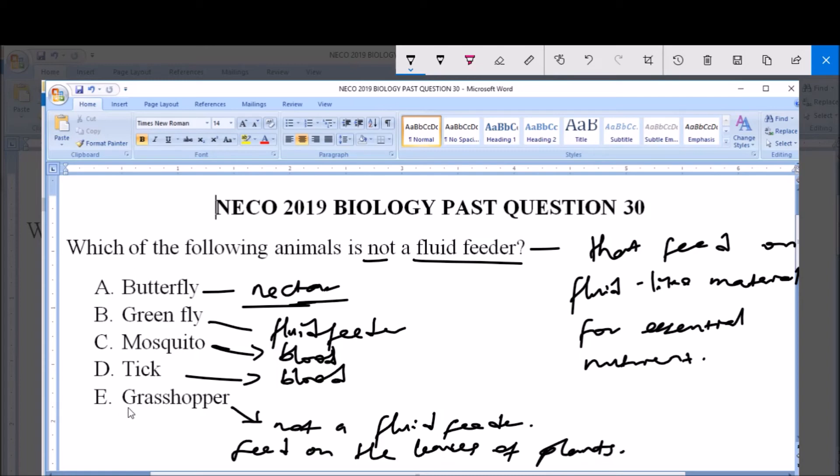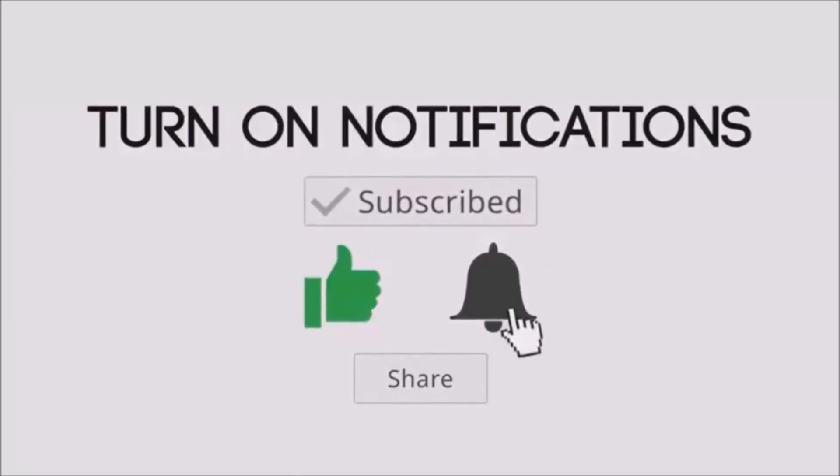So it is not a fluid feeder. Therefore, the answer to this question is actually option E, grasshopper. Grasshopper is not a fluid feeder. Thank you and God bless you and please subscribe to the channel for more videos. Thanks so much.